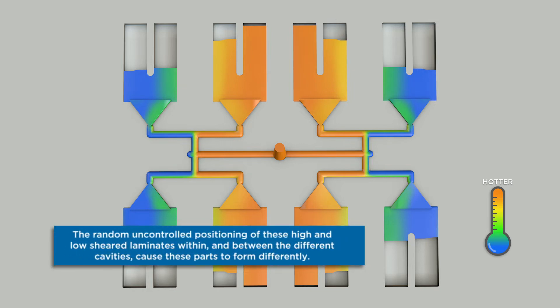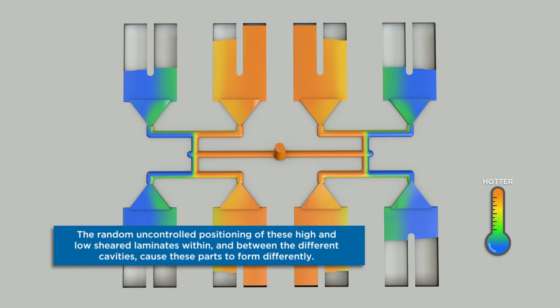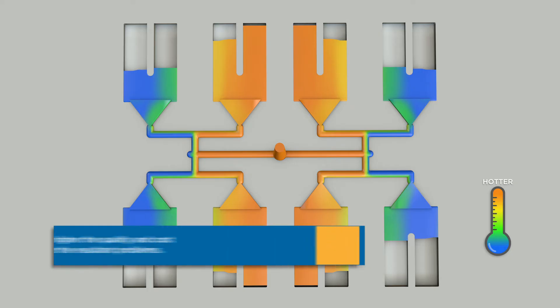Because cavities are filling at different rates, at different pressures and at different temperatures, parts will fill, pack out and shrink much differently than each other. These variations will lead to issues such as part dimensional differences, flash, short shots, sinks, voids and many other inconsistencies between the final parts.